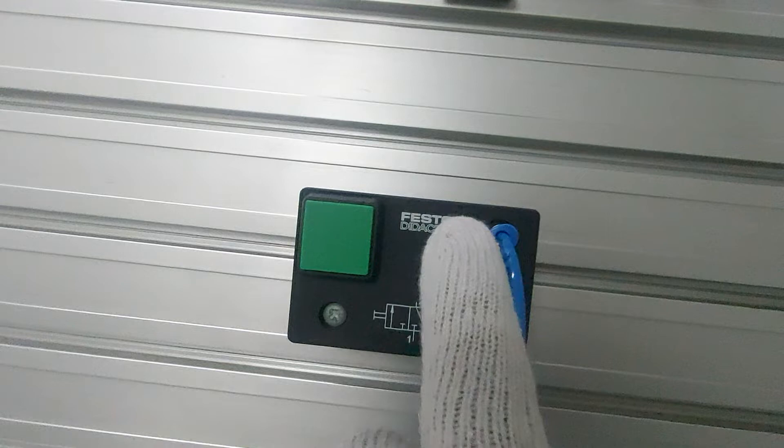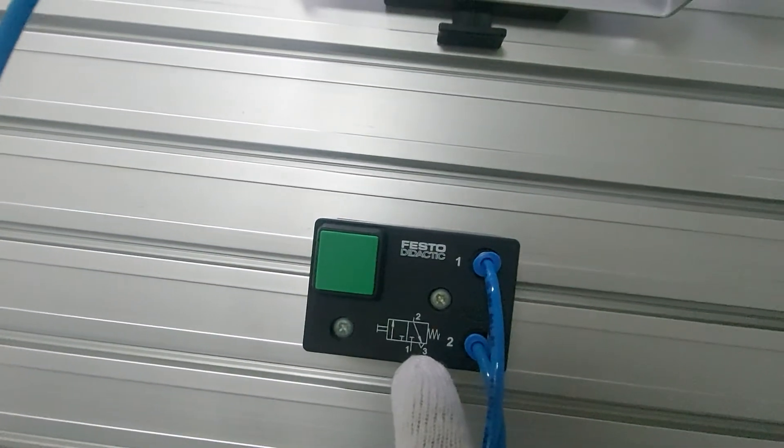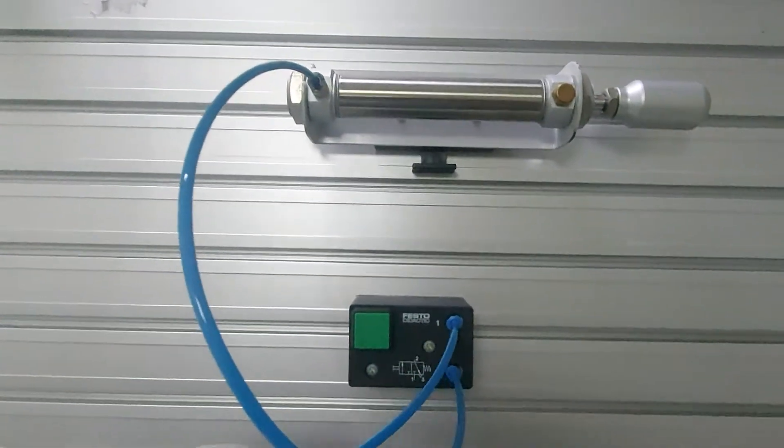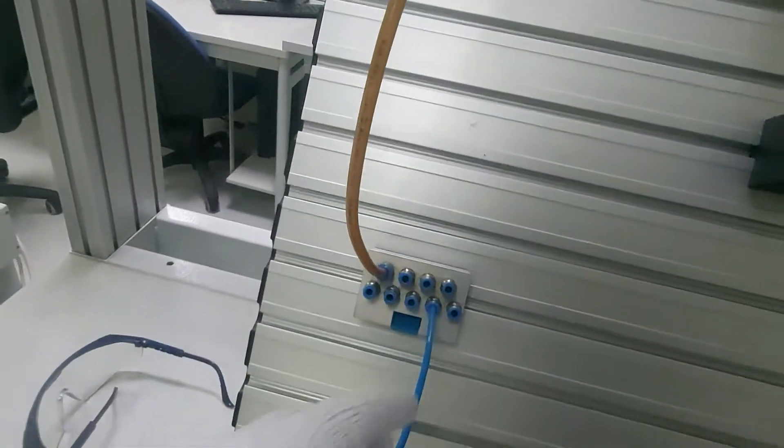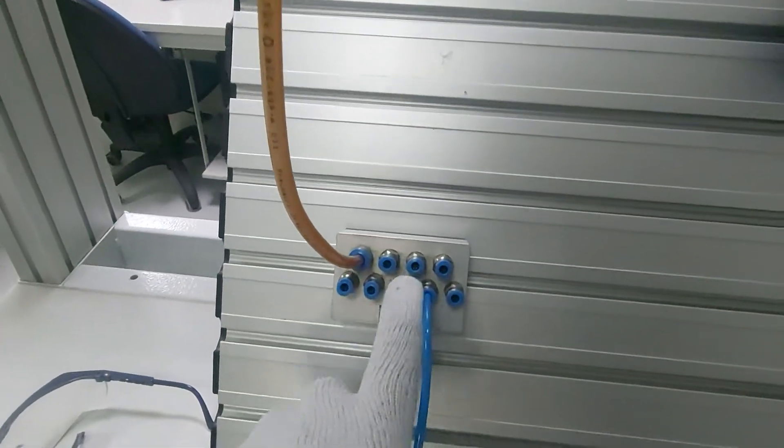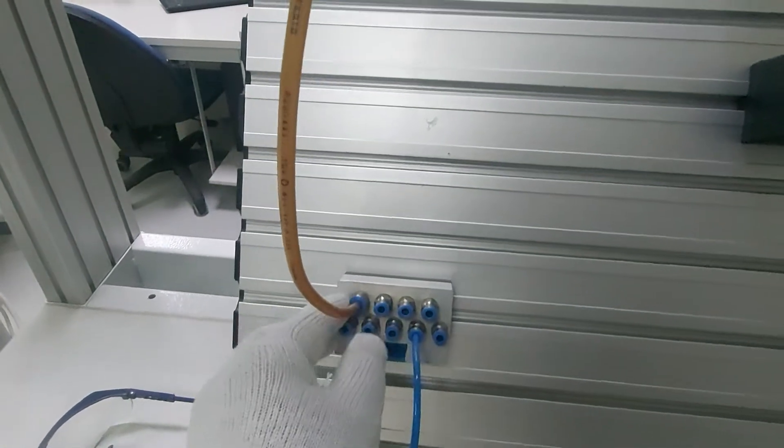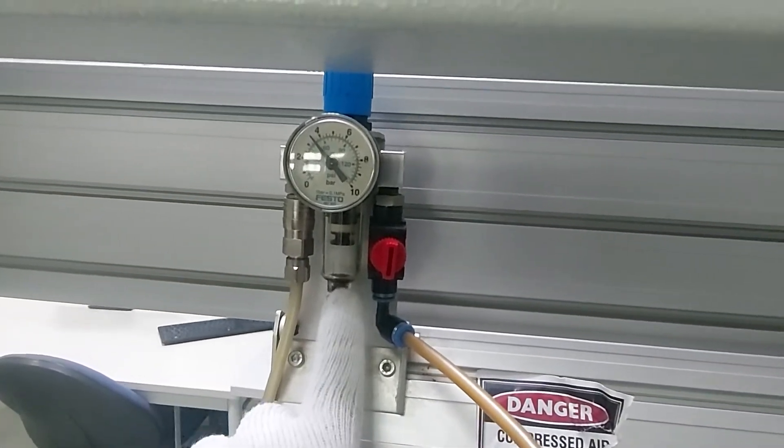For the connections, you have one and two. Three is exhaust. One is always input. It is from the source, you supply the compressed air from the compressor. Here, port one is connected to the distributor. This is the distributor where you can connect many components.